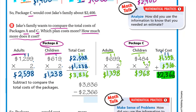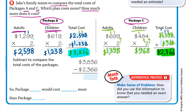To compare the totals we subtract: $3836 minus $2366. 6 minus 6 is 0. 3 minus 6 can't work, so borrow from the 8 — the 8 becomes 7 and 3 becomes 13. 13 minus 6 is 7. 7 minus 3 is 4. 3 minus 2 is 1. The result is $1470. So package A costs $1470 more than package C.